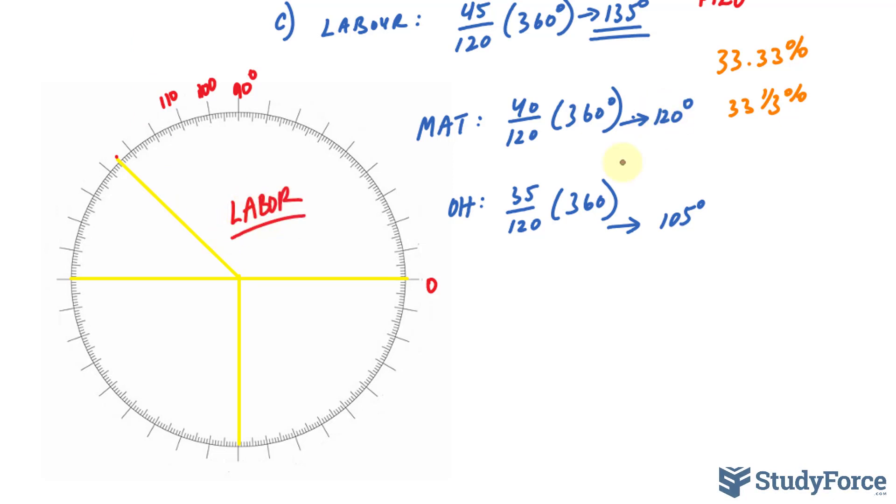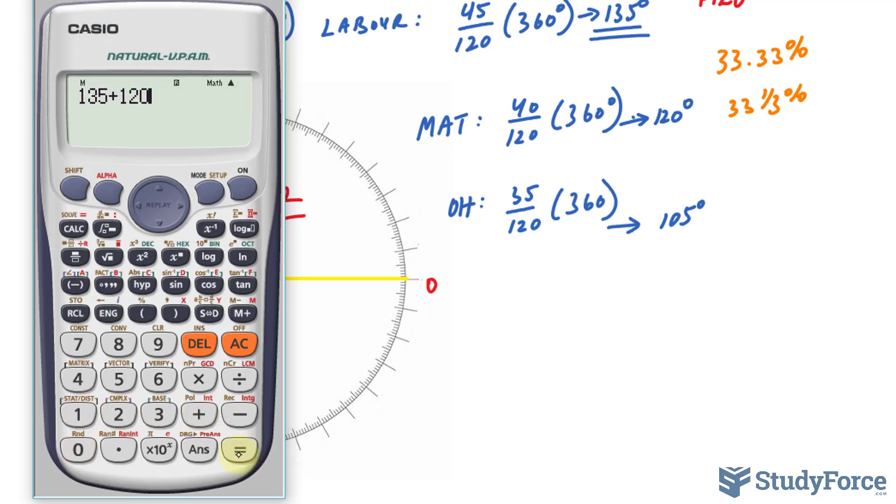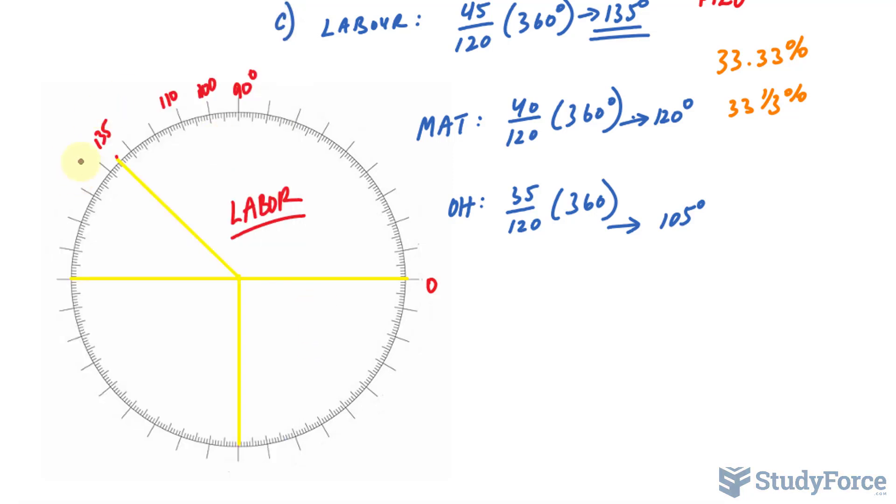Next, we have 120. So this was 135. 135 plus 120 will tell us where to end for materials. We should end at 255. So now we have to find out where 255 is. Remember that's 270, that's 260, 250, and we need to end at 255. So our next portion should be from here to here.